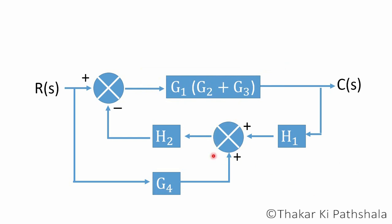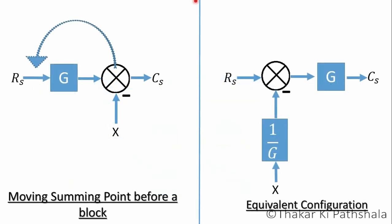Now there are no pair of blocks which are in parallel or in series configuration. But if we move this summing point before this block H2, then these two blocks H1 and H2 will be in series. We can apply rule number five to this configuration in order to move the summing point before the block. Rule number five tells that in order to move the summing point before the block,